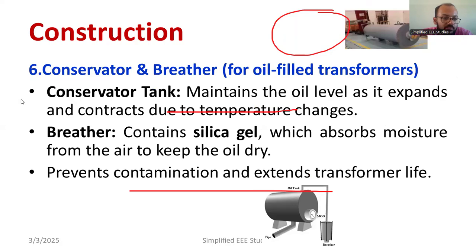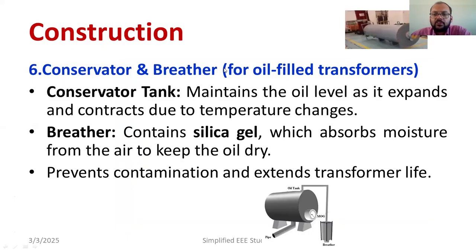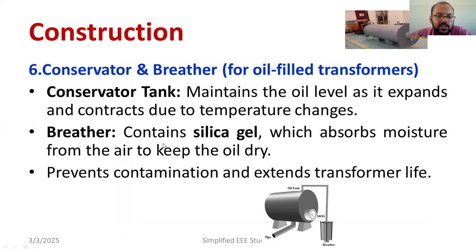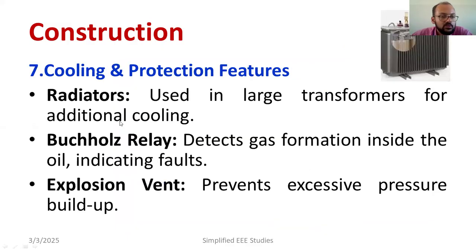Now I will discuss the conservator, where transformer oil is stored. There will be a special indicator, and the expansion depends on the temperature rise. Along with the conservator, there will be a breather — silica gel is used as a breather, which absorbs moisture and keeps the oil dry. This is important because if there is moisture content, the quality of the oil will be spoiled.